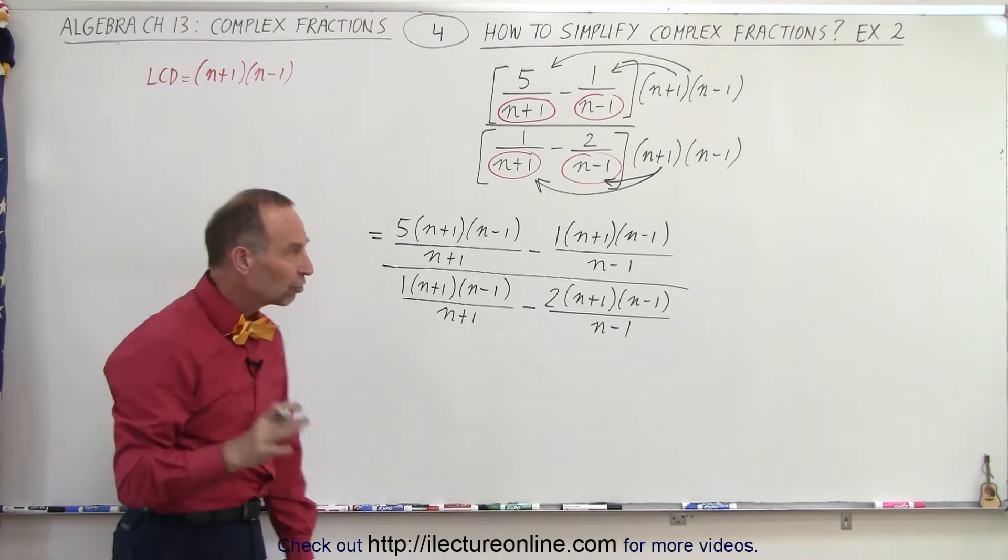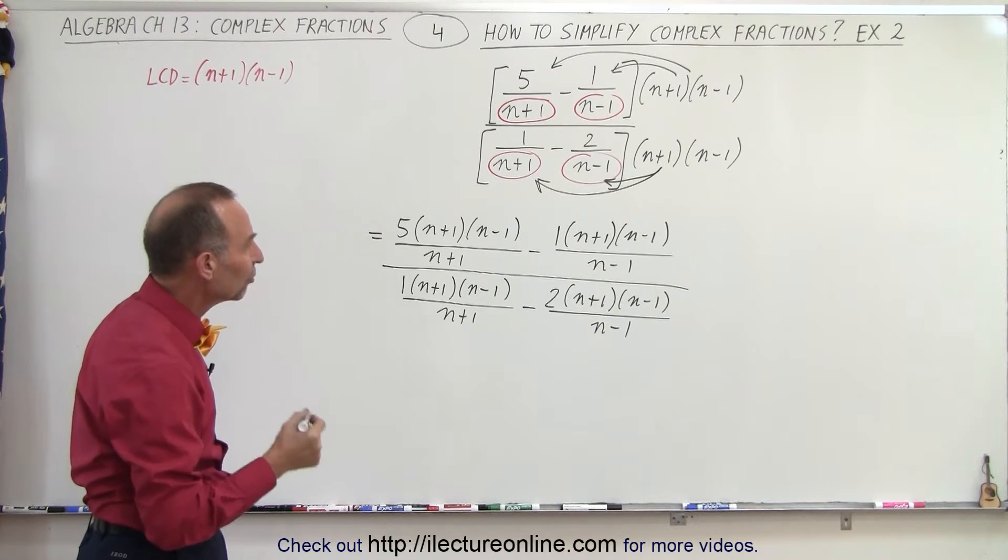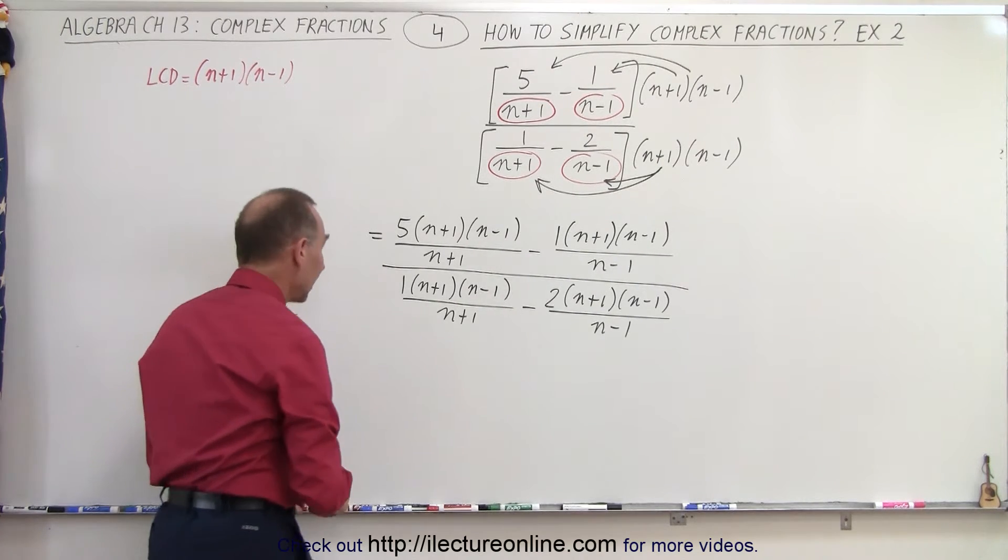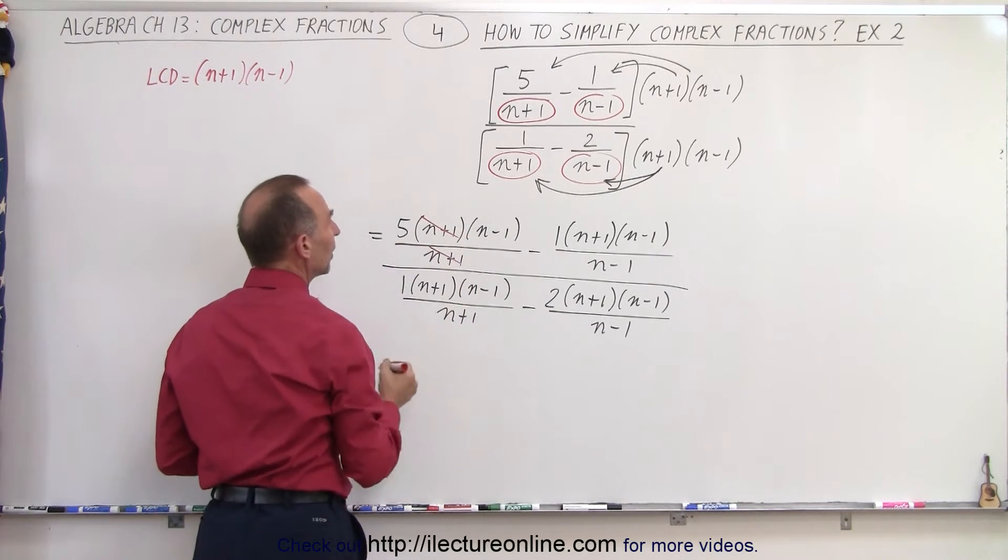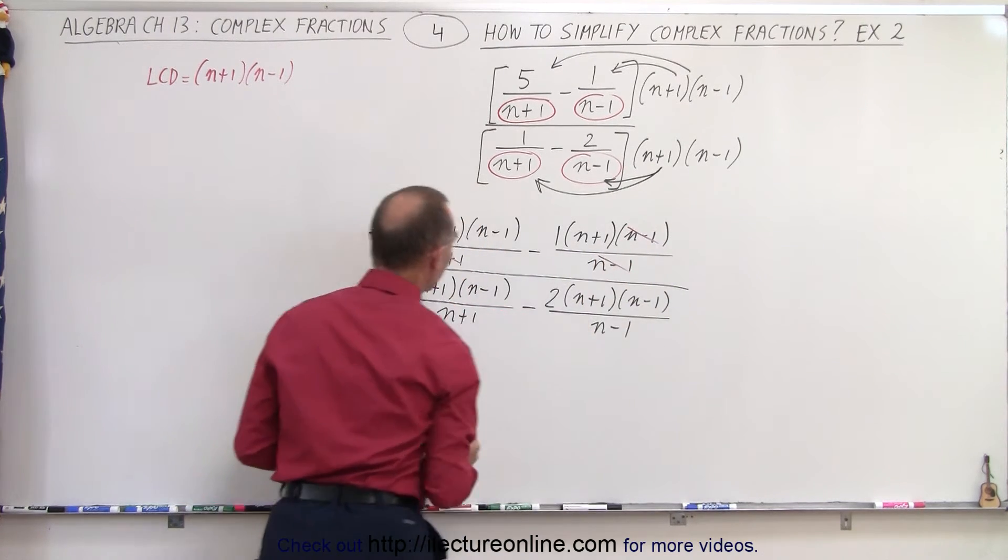Now, why did we put that additional step in there? Well, we did that so it makes it easier to see what can now be cancelled out. Notice we have an n plus 1 here, cancelled out with n plus 1. We have an n minus 1 that cancels out with n minus 1.